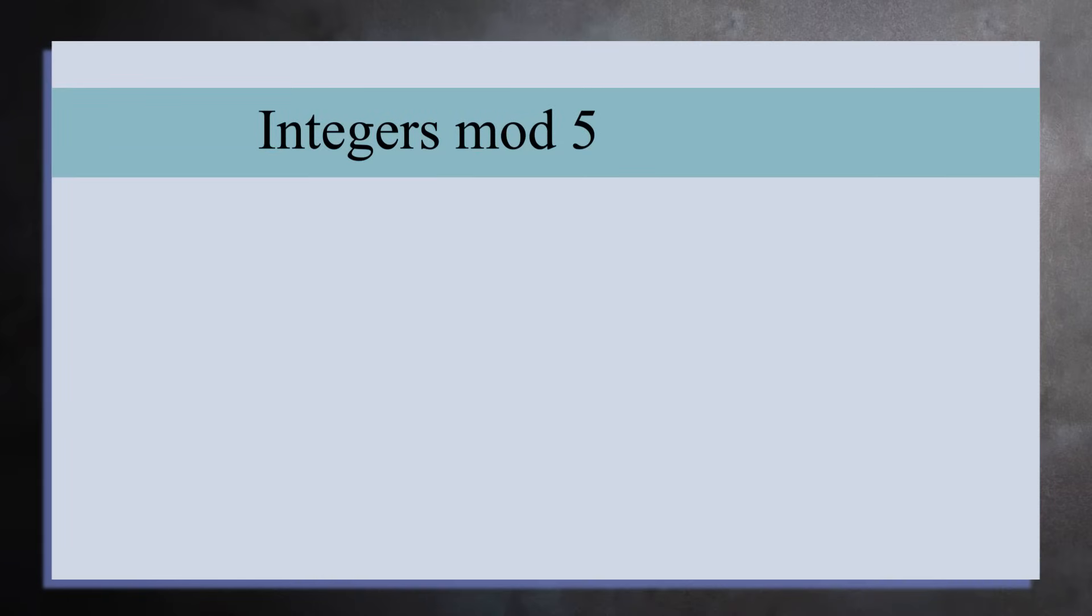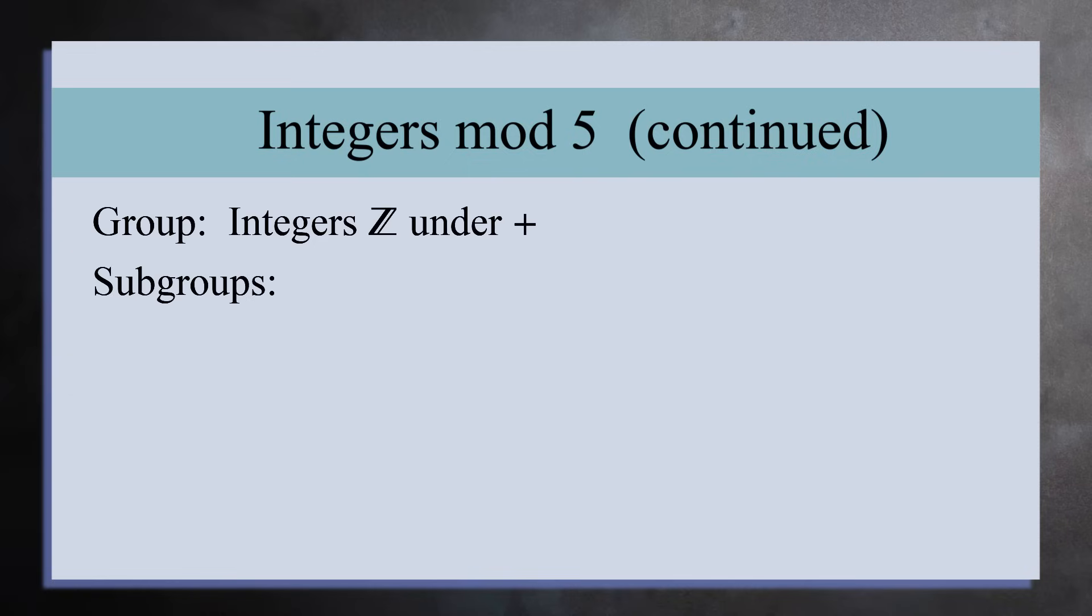Let's take another look at the integers mod 5 using the language of group theory. To start, we have the group of integers Z under addition. This group has an infinite number of subgroups, but we'll look at the subgroup of the multiples of 5, which we'll write as 5Z. Graphically, let's represent the group of integers by a rectangle, and the subgroup 5Z as a smaller rectangle inside of it.